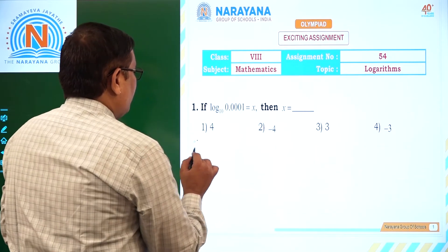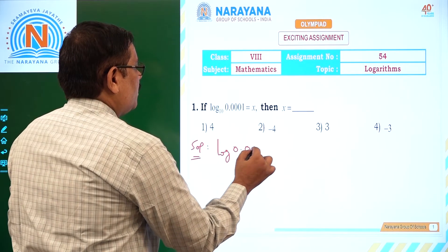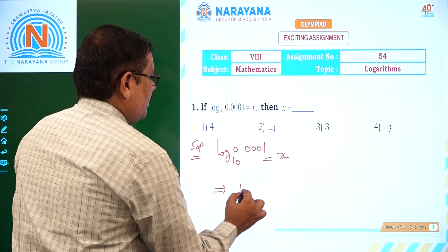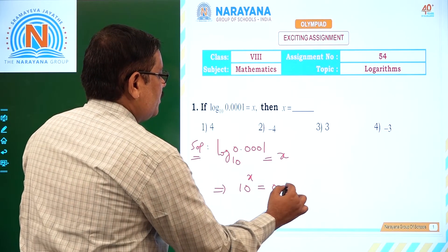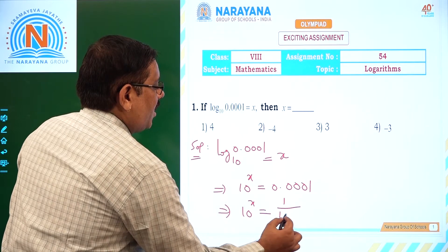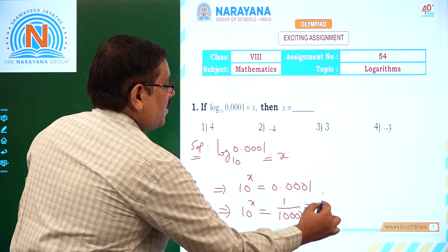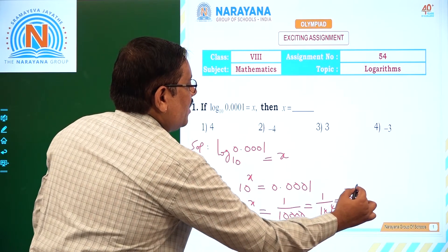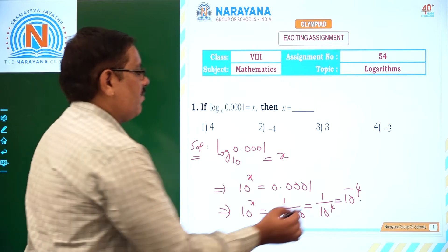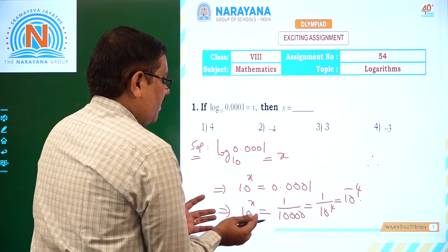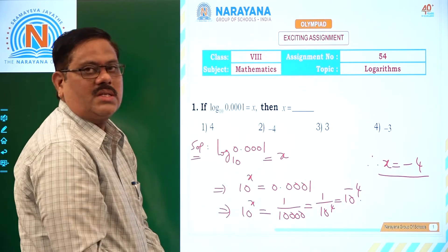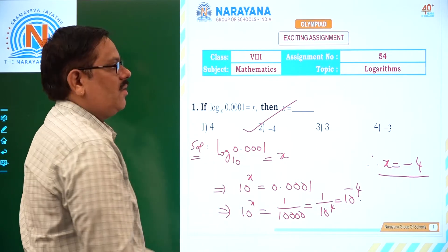Now, as per the given question, log 0.0001 to the base 10 is x. That implies 10 to the power x is equal to 0.0001, which is 1 upon 10 to the power 4, that is 10 to the power of minus 4. So, 10 power x equals 10 power minus 4, therefore x is equal to minus 4. That is the second option.